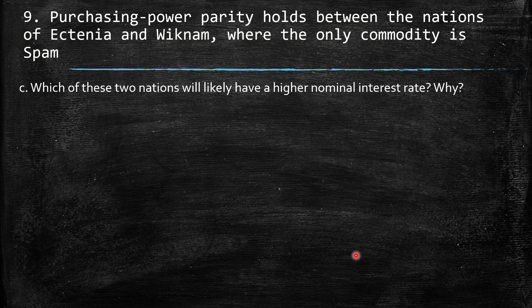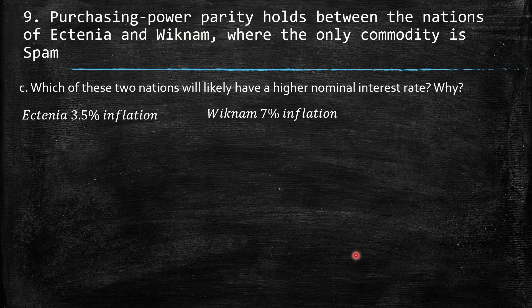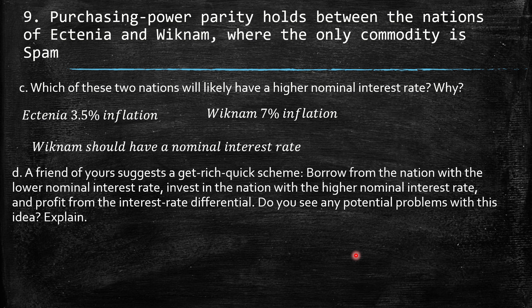Part C: which of these two nations will likely have a higher nominal interest rate, and why? Ictania faces 3.5% inflation and Wignam faces 7% inflation. Wignam should have a higher nominal interest rate because it needs to compensate for its larger inflation.